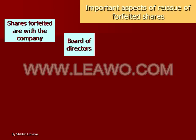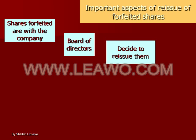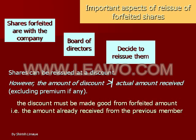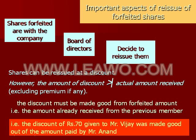Now let us learn some important aspects of reissue of forfeited shares. The shares that are forfeited are now in the hands of the company. The company then calls a meeting of the board of directors, who may decide to reissue these shares. Remember, shares can be reissued at a discount; however, the amount of discount should not be more than the actual amount received, excluding premium if any. The discount given to the new buyer should be made good from the forfeited amount — that is, the amount already received from the previous member.